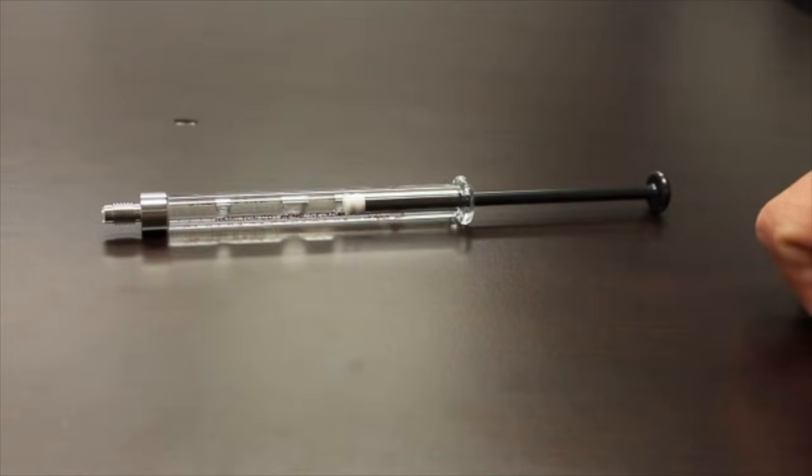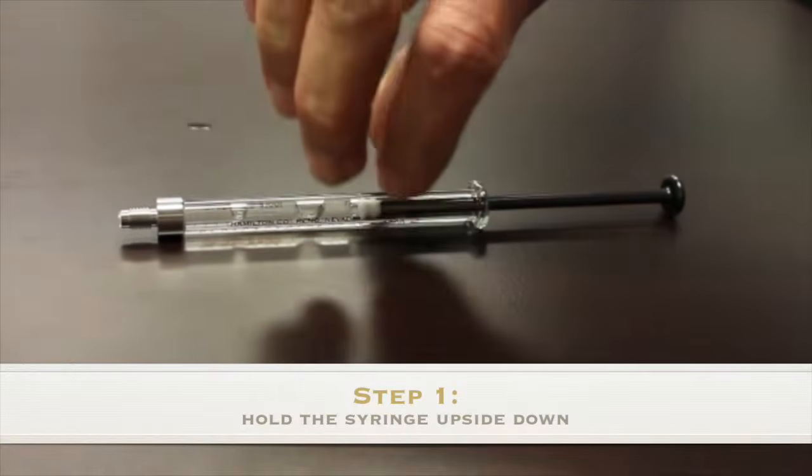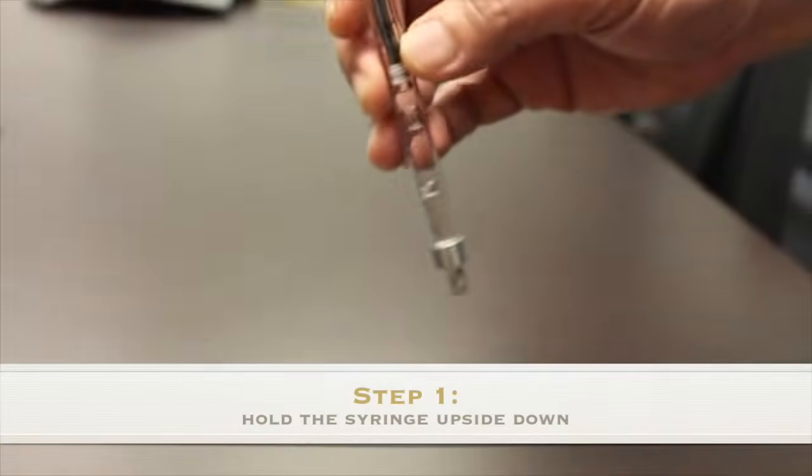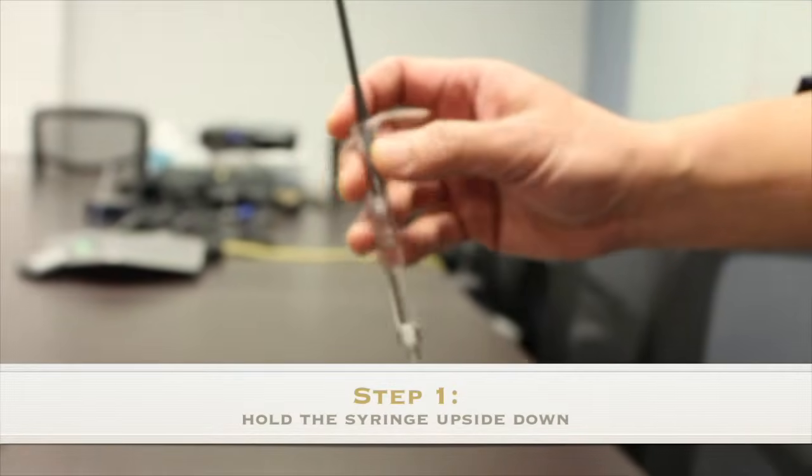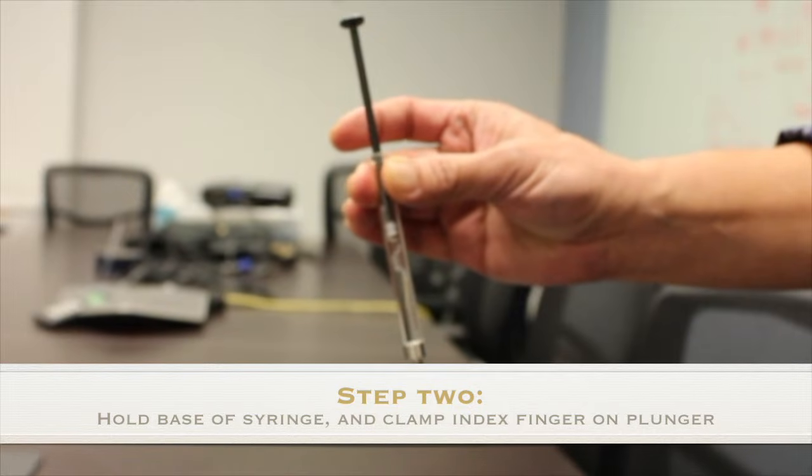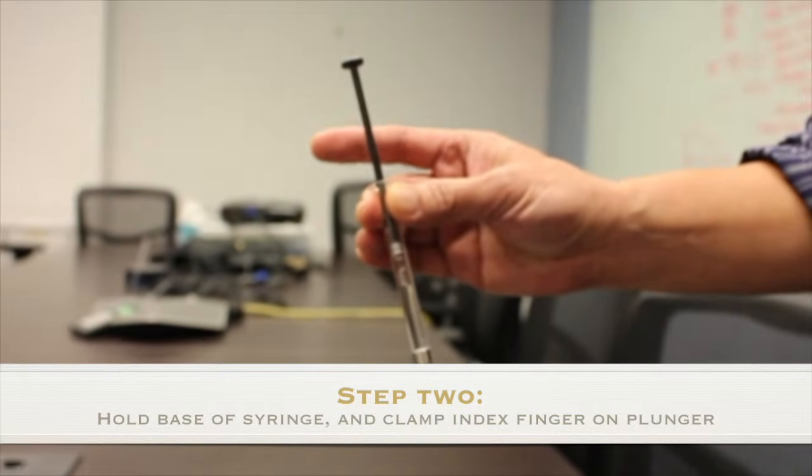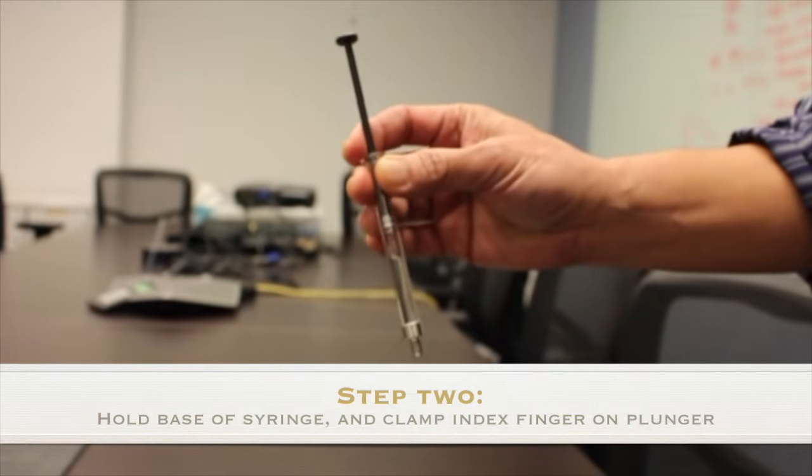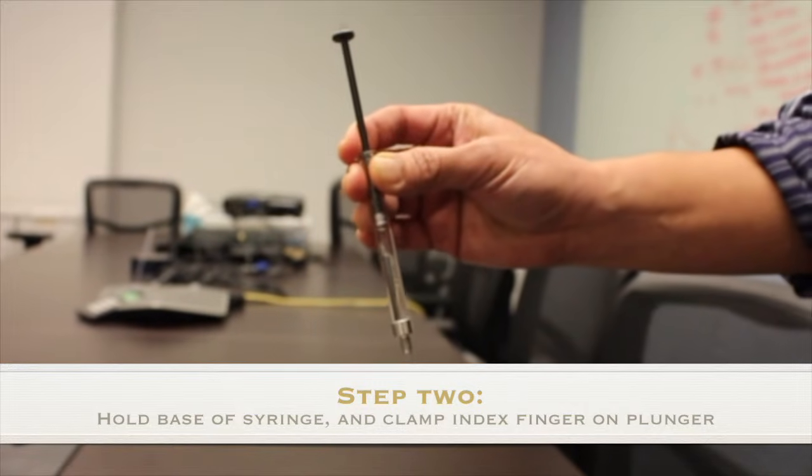We have a nice low-tech way of getting these air bubbles out by first holding the syringe upside down, and then with your middle finger and thumb hold the base of the syringe and with your pointer finger clamp down on the plunger.